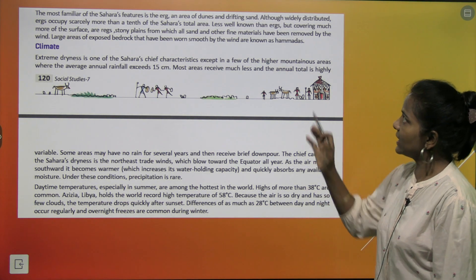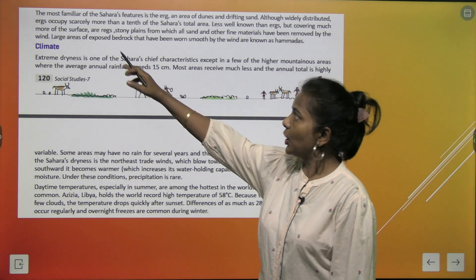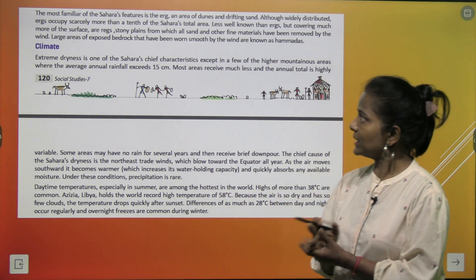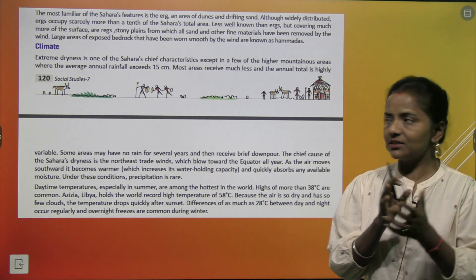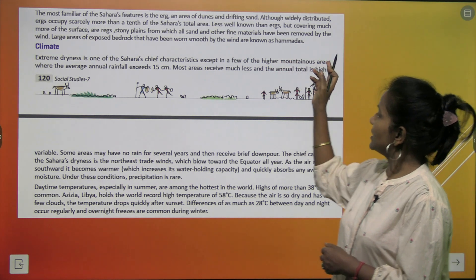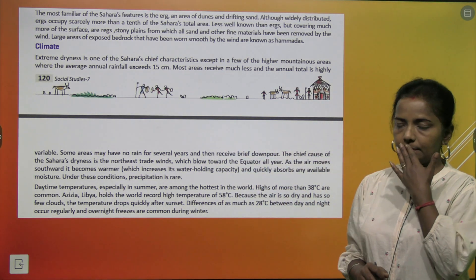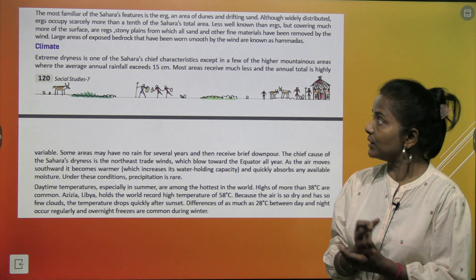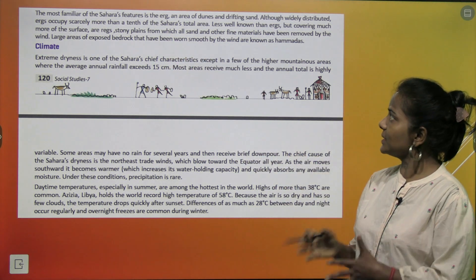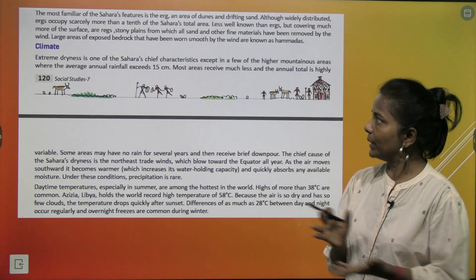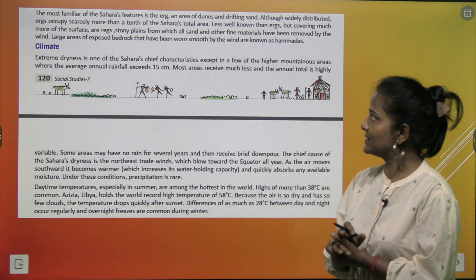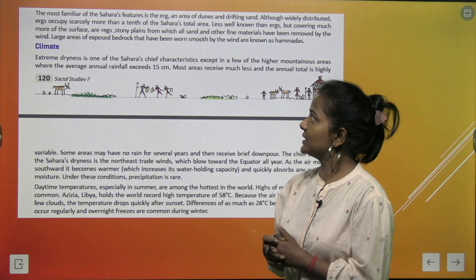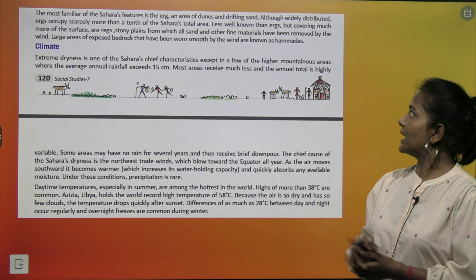The most familiar of the Sahara's features is the Erg — an area of dunes and drifting sand. Although widely distributed, ergs occupy scarcely more than a tenth of the Sahara's total area. Less well known than ergs but covering much more of the surface are Regs — stony plains from which all sand and other fine materials have been removed by the wind. Large areas of exposed bedrock worn smooth by the wind are known as Hamadas.